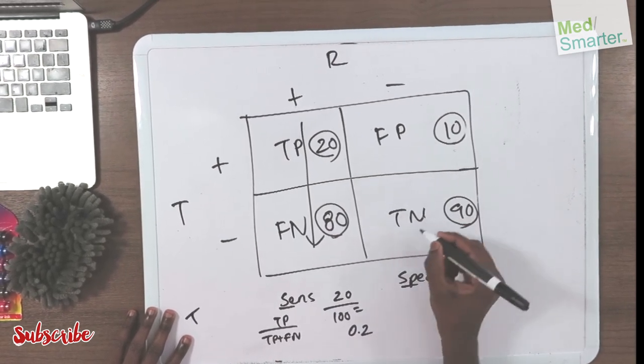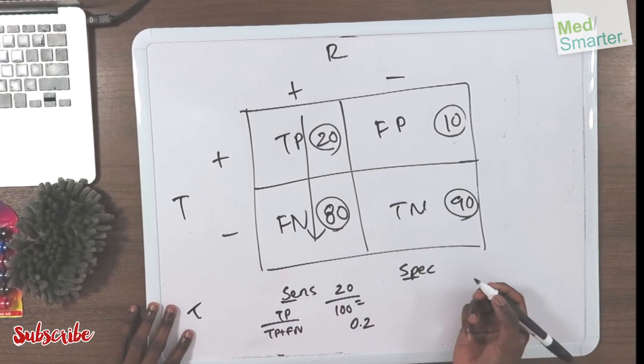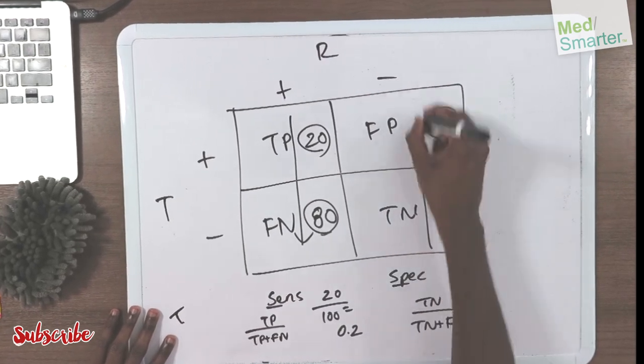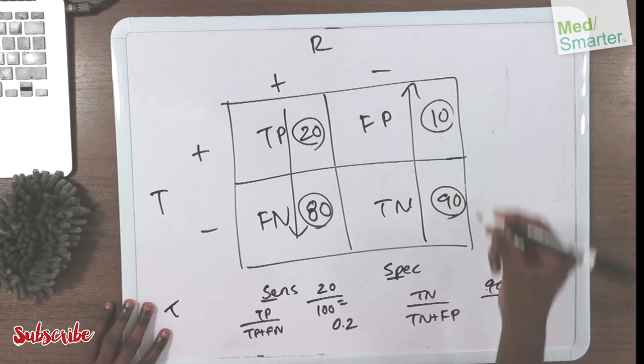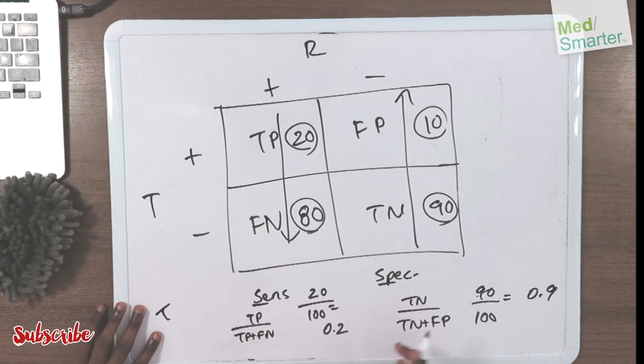For specificity, remember your trues go on top. It's true negative divided by true negative plus false positive, go straight up. So it's 90 divided by 90 plus 10, which is 100, equals 0.9.